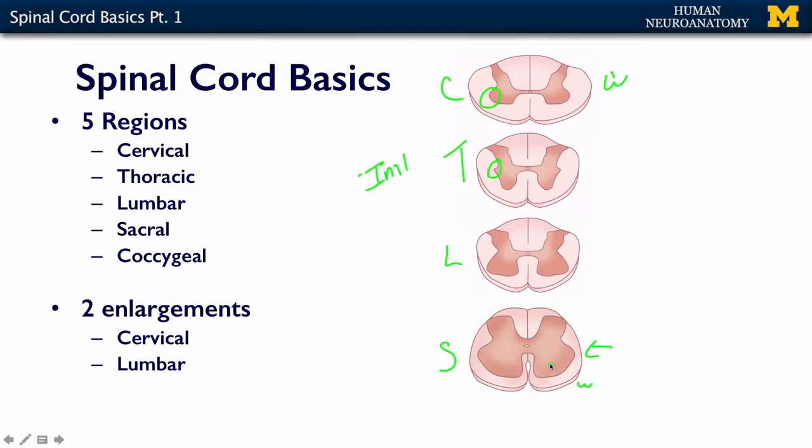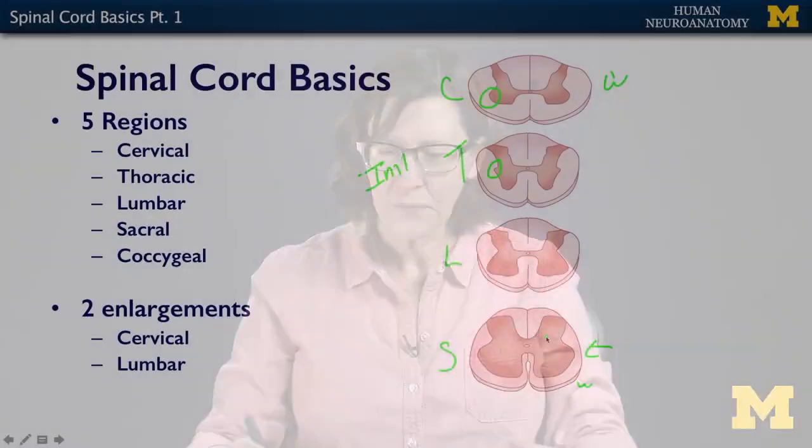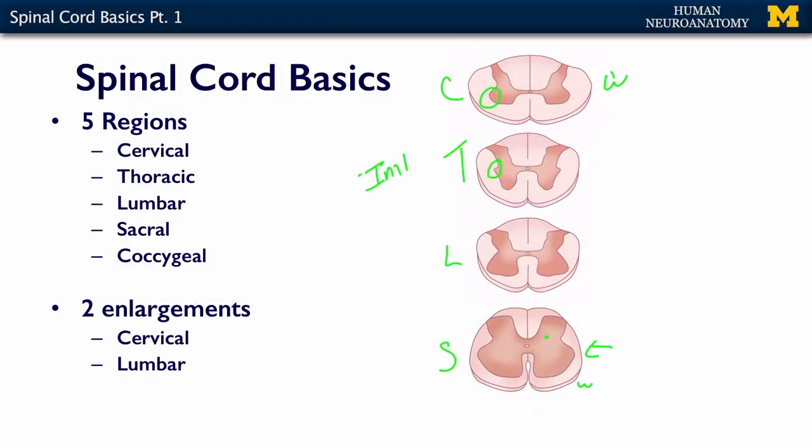It also works on the way up: sensory information coming in starts to accumulate, so you get more kids on the bus. At the very beginning of the route — way out in the boonies — a few kids get on the bus, a few fibers join the spinal cord, and then as you go up, more and more fibers join until you get to the top — everybody's on the bus right before you get to school. So that is my analogy of why you have varying amounts of white matter up and down the cord. Fewer fibers at the bottom, more fibers as you get to the top.